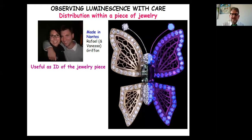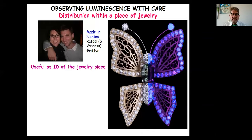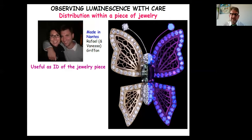Luminescence can add real personality and value to jewelry. An example from Nantes, France: a butterfly piece by jeweler Raphael for his wife Vanessa, where the border of the butterfly wings is set with diamonds luminescing blue with a gradation in luminescence intensity — requiring about one year to assemble. The diamonds had to match in color and size, but show a regular, continuous variation in luminescence intensity. This makes the piece absolutely unique.